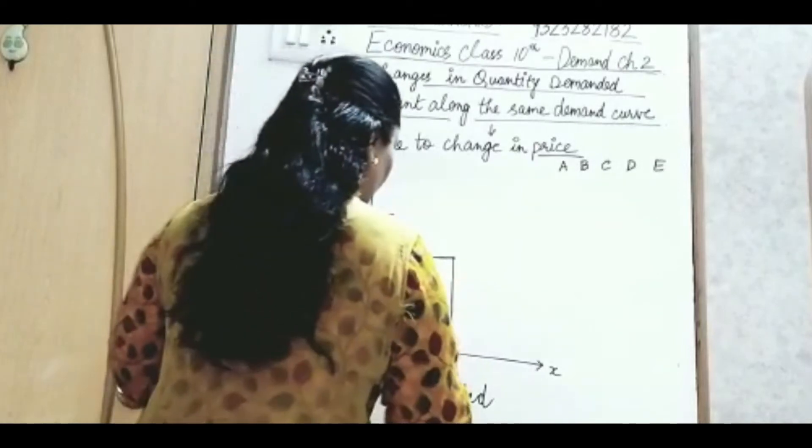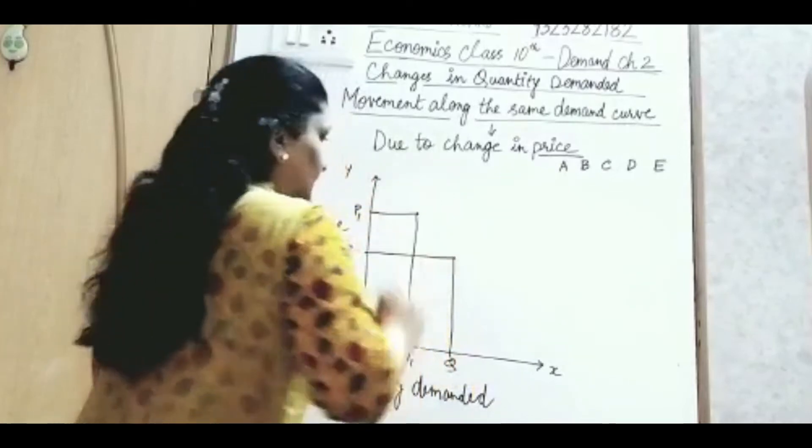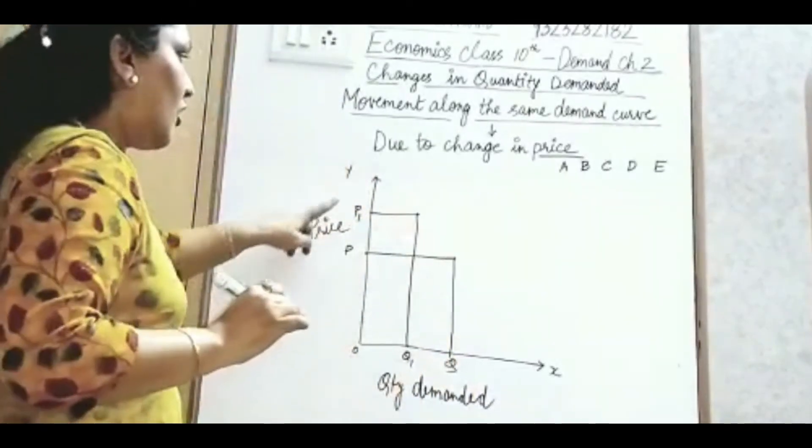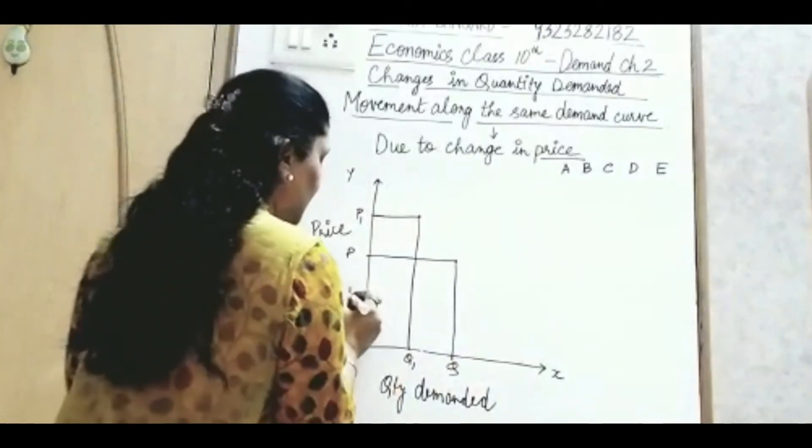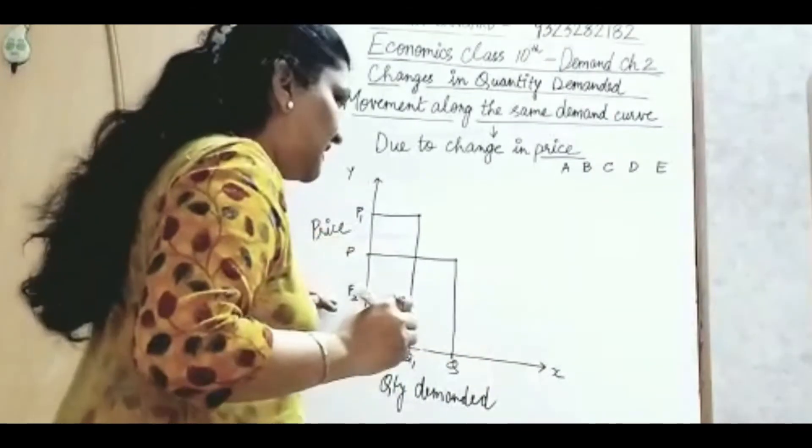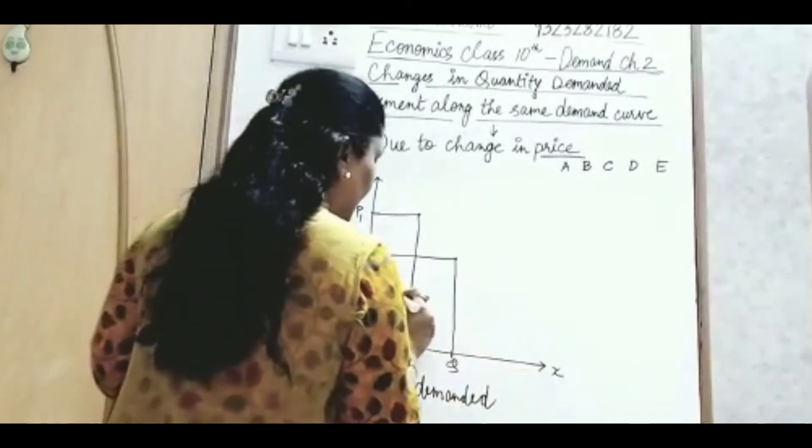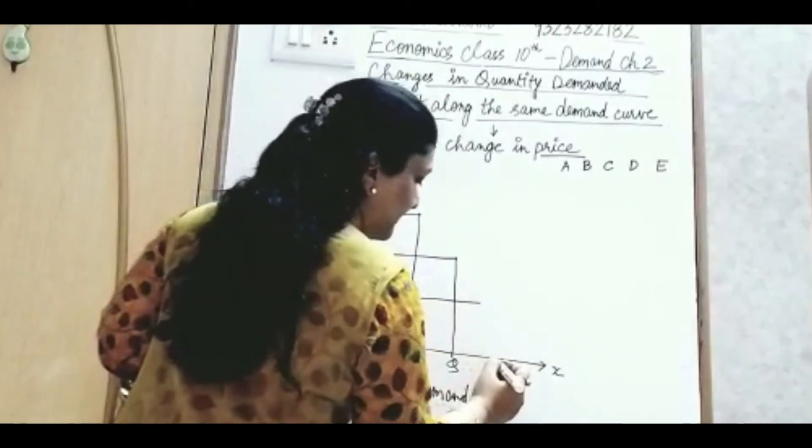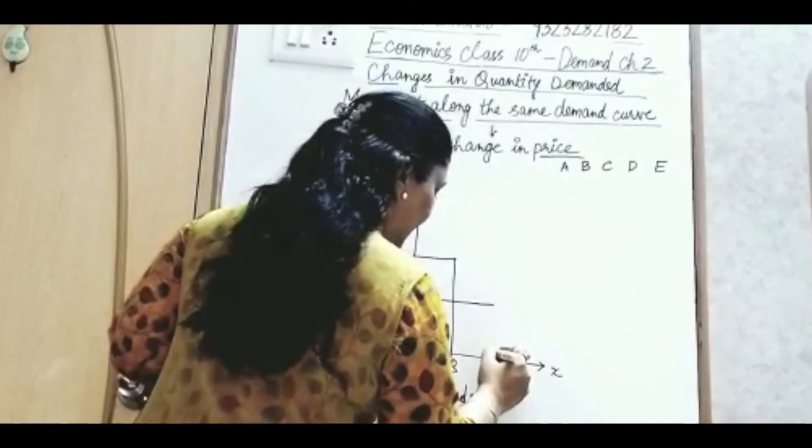तो यदि इन दोनों को हम लोग graph पे करें, तो हमको यह point इधर मिला है. और यदि price घटती है और P2 होती है, price is decreasing and becoming P2. तो when price decreases, quantity demanded increases, तो वो बढ़ जाएगा और Q की बजाए अब लोग मांगेंगे Q2 quantity. तो वो कहीं इधर आएगा.